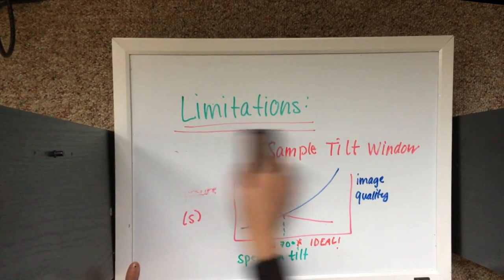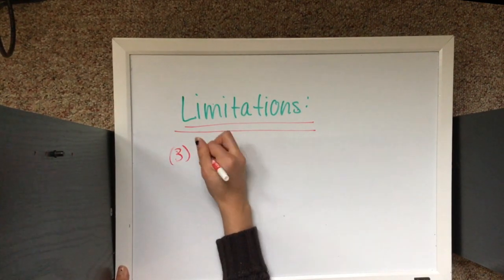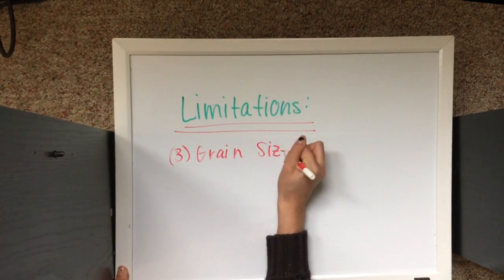EBSD cannot be used to deduce grain orientation for materials that have a very small grain size, below 25 nm.